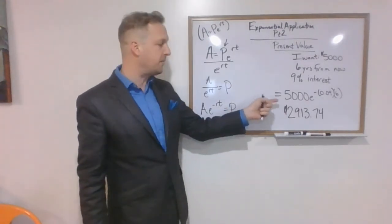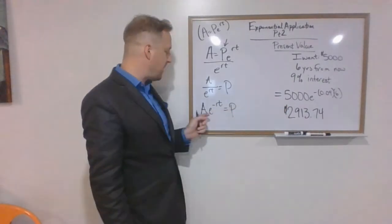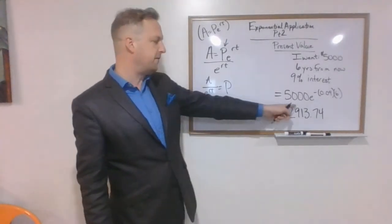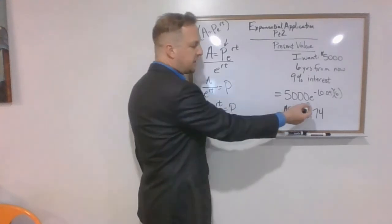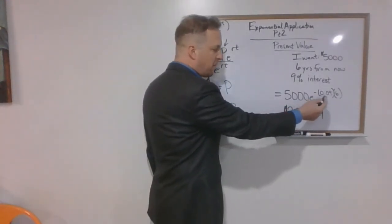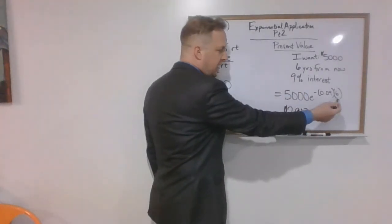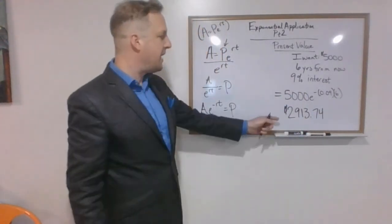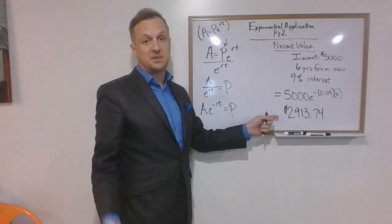So if we take a look over here, you can see an example of that. We've got the amount that we want at the end, $5000, times e. And then we are raising that to the negative 0.09, there's our 9% interest, times 6 years from now.